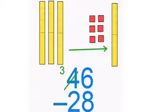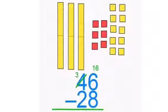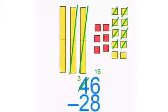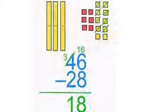This would leave us with 3 tens and 10 more little ones in the ones column, which would make 16. We can now take 8 away from 16 and 2 away from 3, which would leave us with 18.